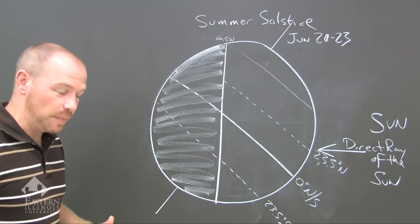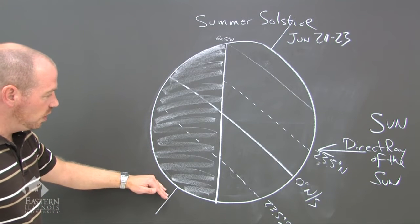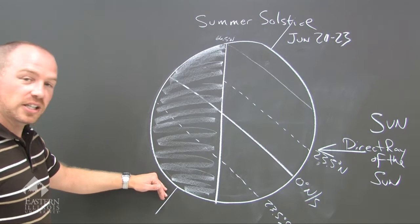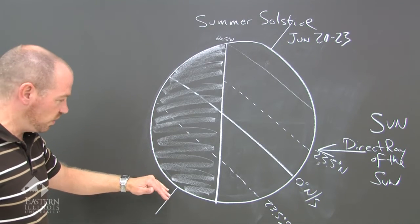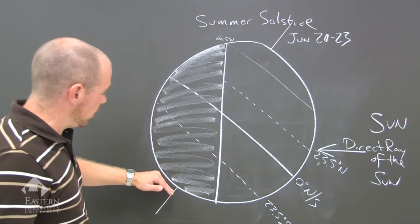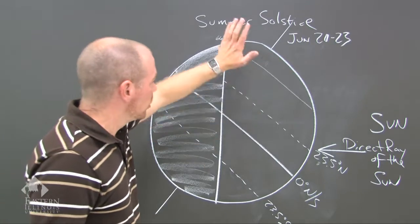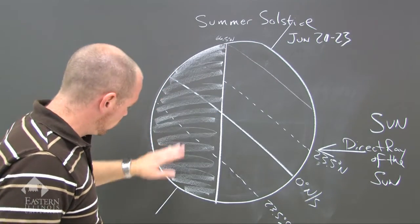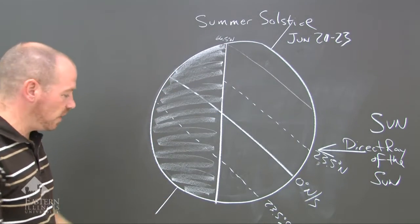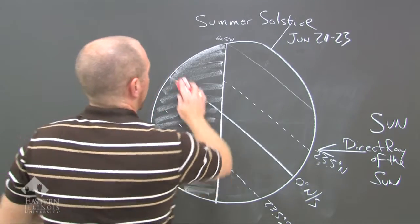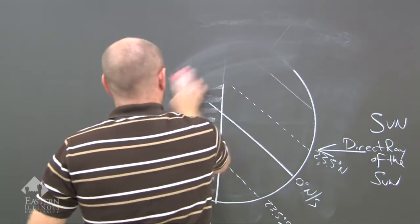Speaking of opposites, in the southern hemisphere, the south pole is experiencing 24 hours of darkness — the opposite of what the north pole is experiencing: 24 hours of day versus 24 hours of darkness. So let's go ahead and start a new drawing.